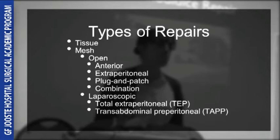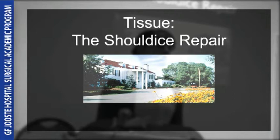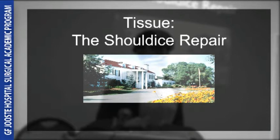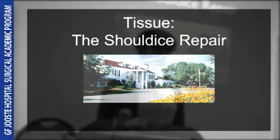The Shouldice repair is a tissue repair pioneered in the 1930s by Dr E.E. Shouldice as part of his war effort — he noticed recruits were being turned away from the army because of groin hernias. The clinic is based in Thornhill near Toronto, where their recurrence rate is only 0.6%. However, this is a complicated repair and surgeons at the Shouldice clinic are supervised for their first 200 repairs. Surgeons outside the clinic do not achieve the same results, though it still has a lower recurrence rate than other tissue repairs such as the Bassini or the McVay.